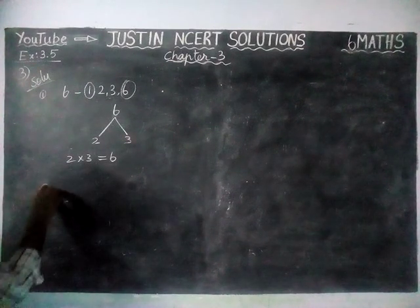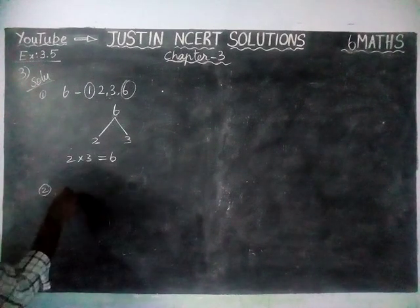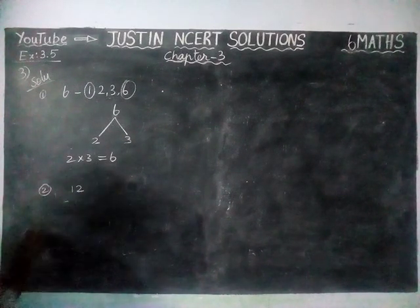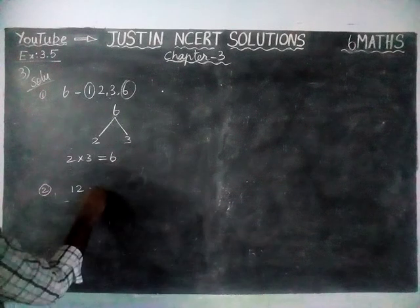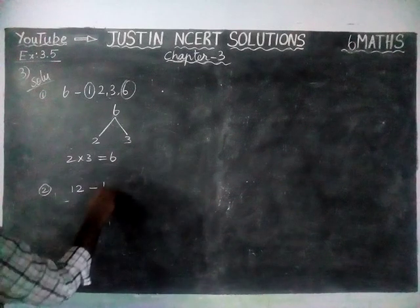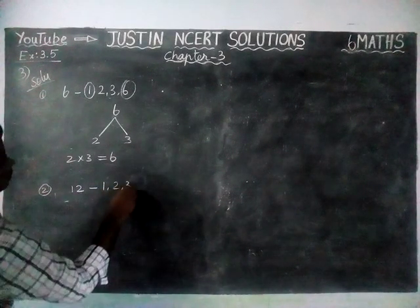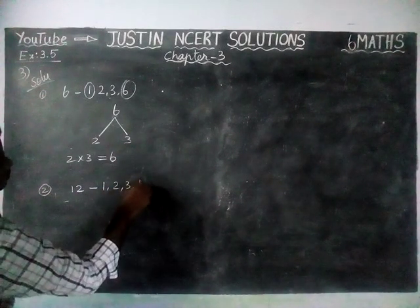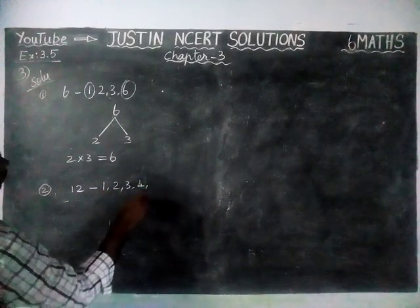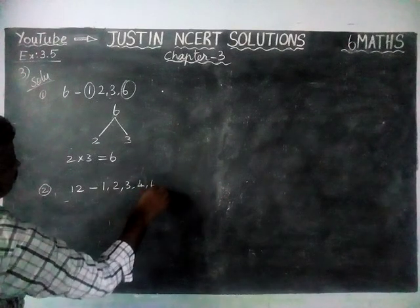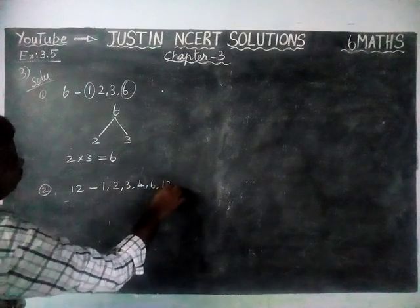Second example: we will take 12. Factors of 12 are: 1, 2, 3, 4, 6, and 12.